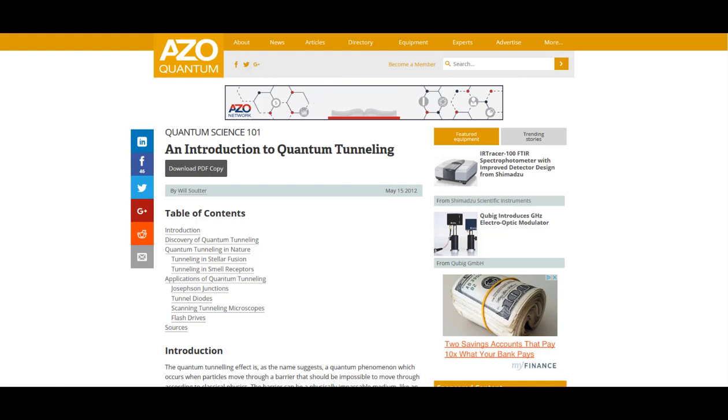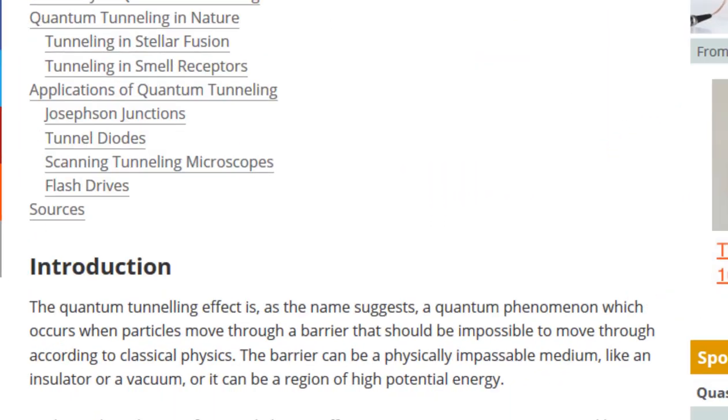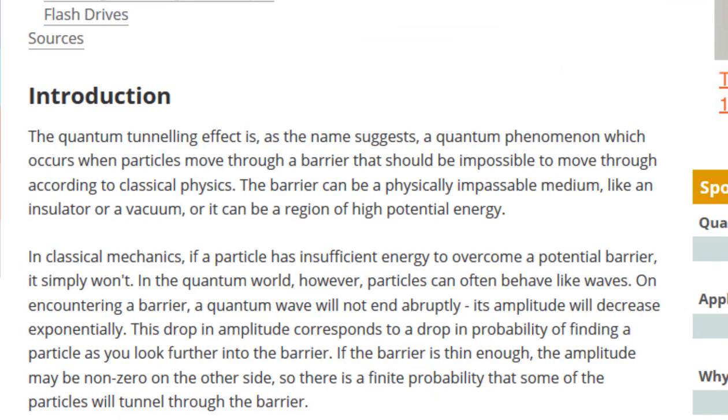This page on azoquantum.com describes what quantum tunneling is and essentially why it makes no sense according to classical physics. The quantum tunneling effect is, as the name suggests, a quantum phenomenon which occurs when particles move through a barrier that should be impossible to move through according to classical physics. The barrier can be a physically impassable medium, like an insulator or a vacuum, or it can be a region of high potential energy.